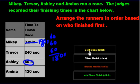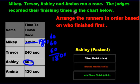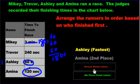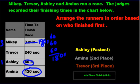Ashley is in first place. Who's in second? Amina — it's the second smallest number. She's second. Silver medal for Amina. And who's in third place? It's Mikey — he's got 180 seconds, the third smallest. Bronze medal for Mikey. And then for fourth place, Trevor — 240 seconds, that's a long time. Fourth place for Trevor.